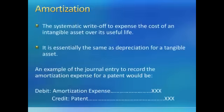Much like tangible plant assets, intangible plant assets are written off to expense over the intangible asset's useful life. Rather than calling this process depreciation, we call it amortization. Amortization is essentially the same as depreciation — it's just what we do for intangible assets.